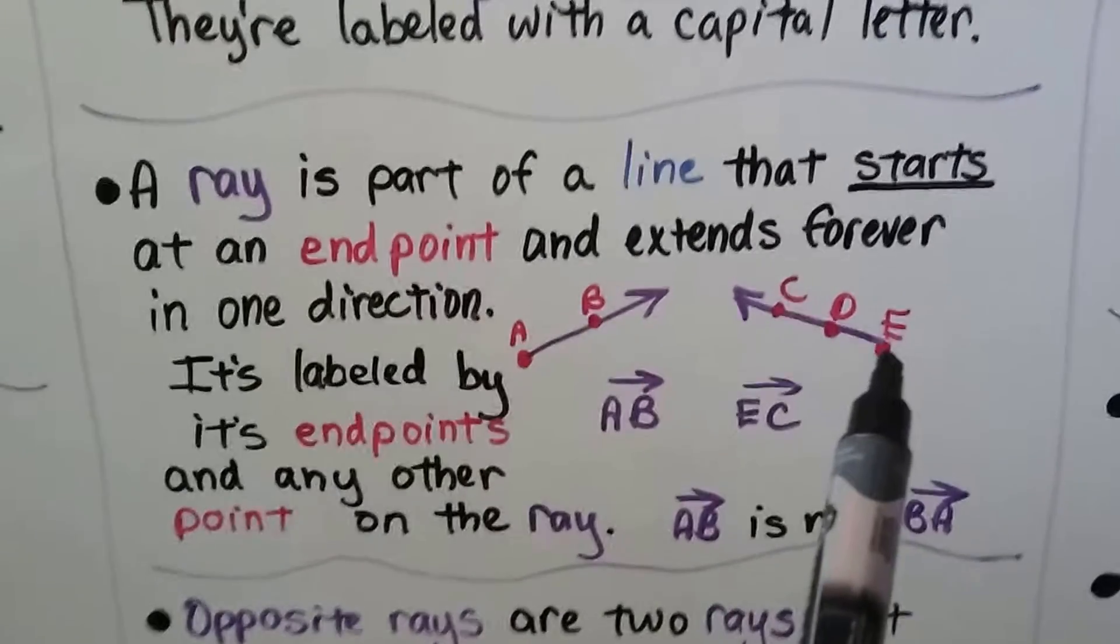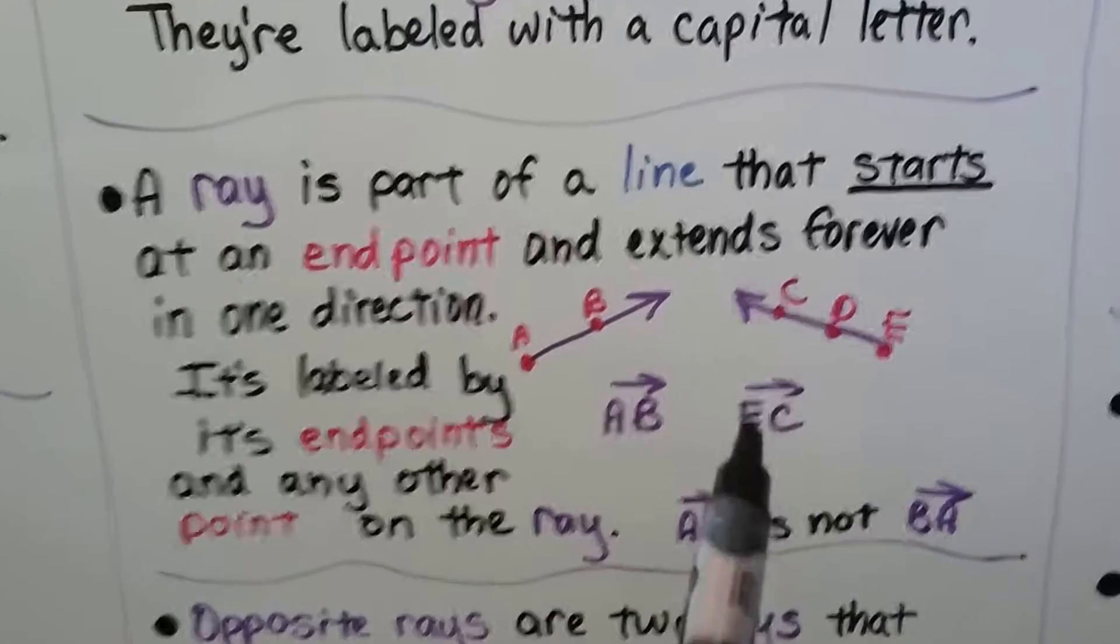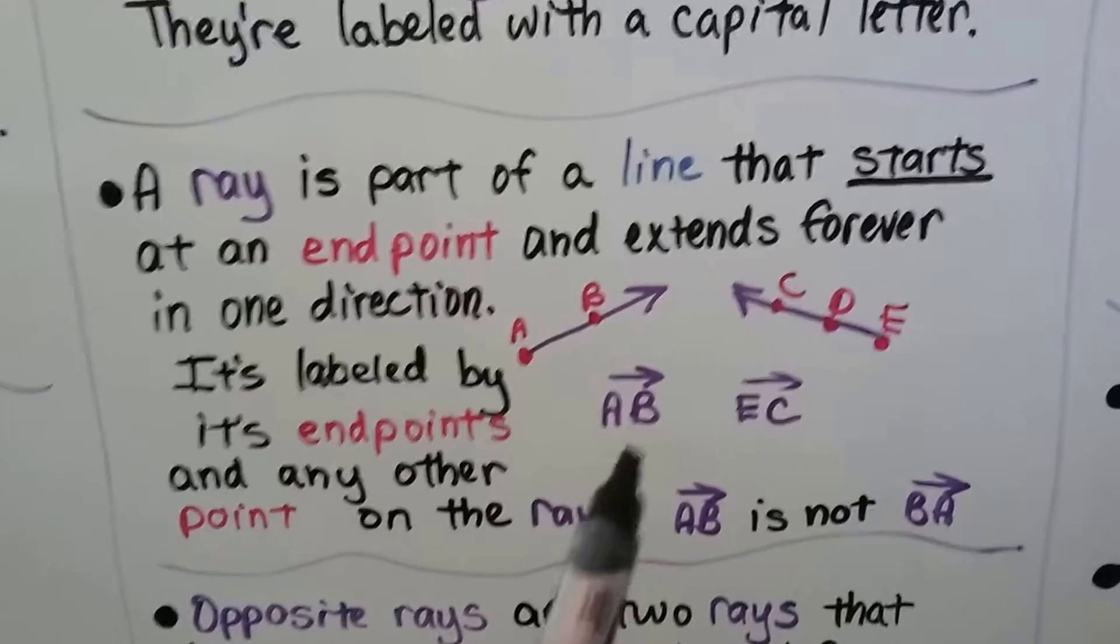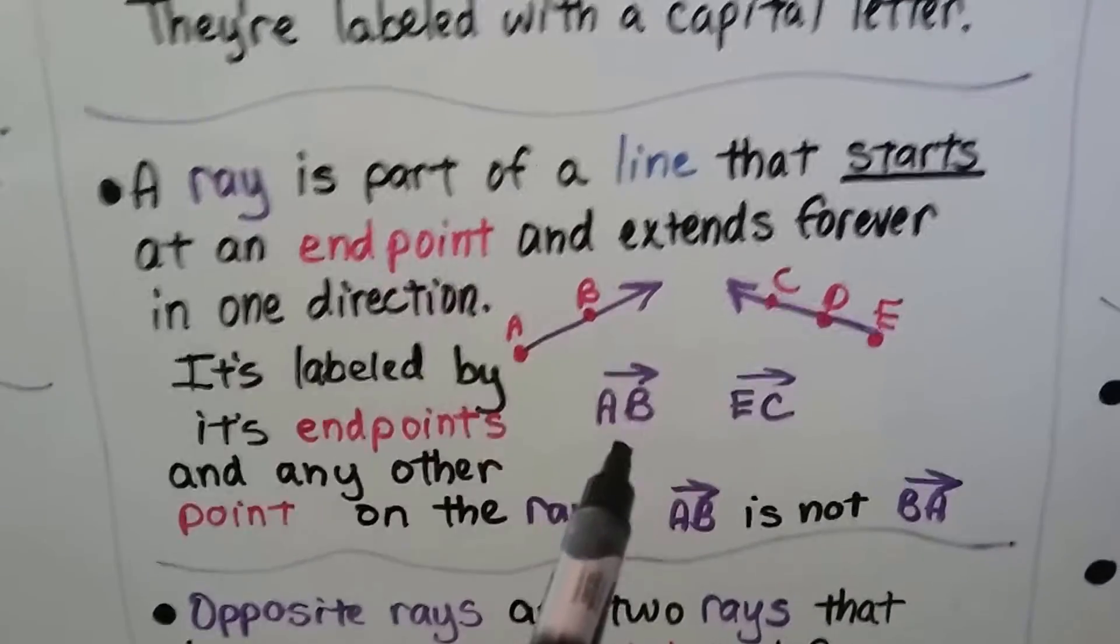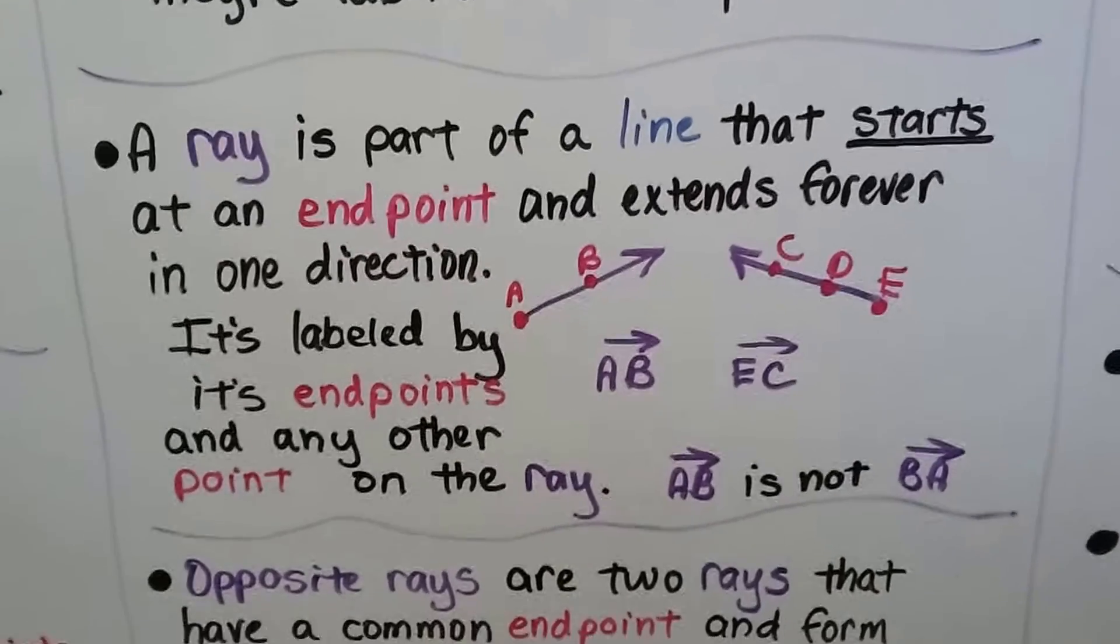It starts with A. So it's AB. This one starts at the endpoint E. So it's ray EC. And it's got an arrow on one side of the bar above the letters to tell us it's a ray.